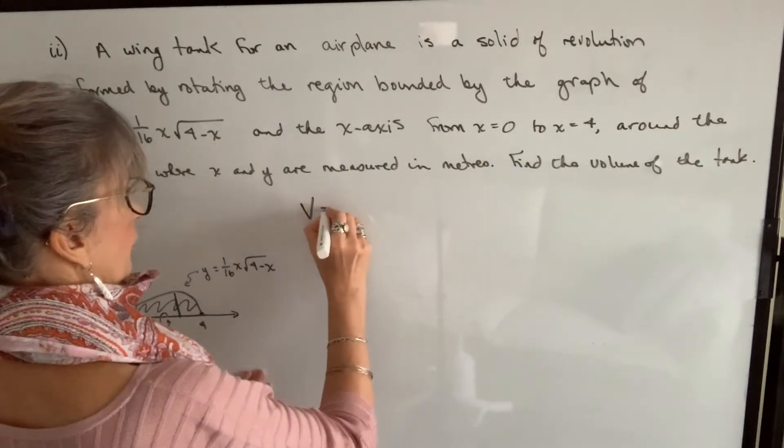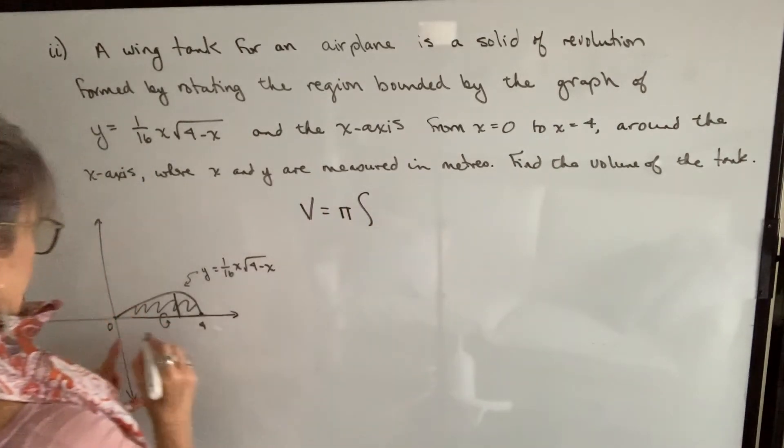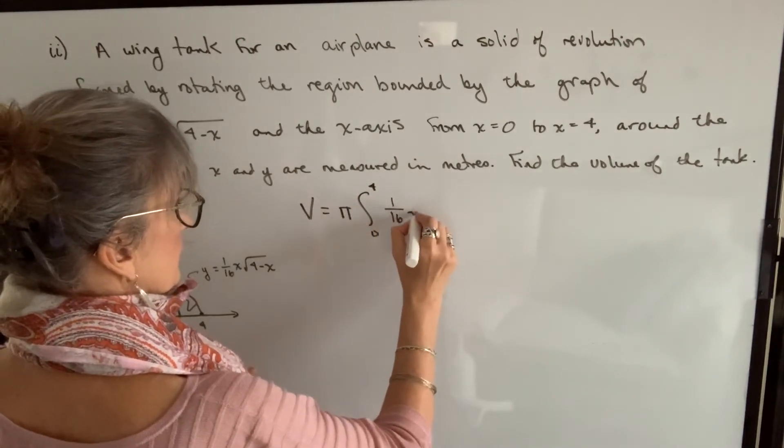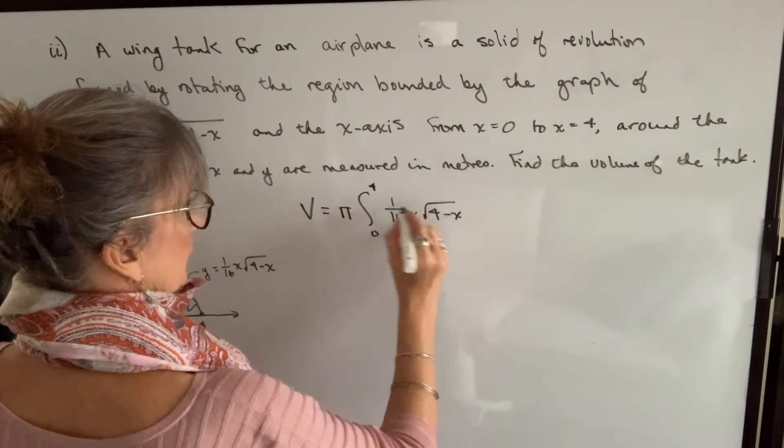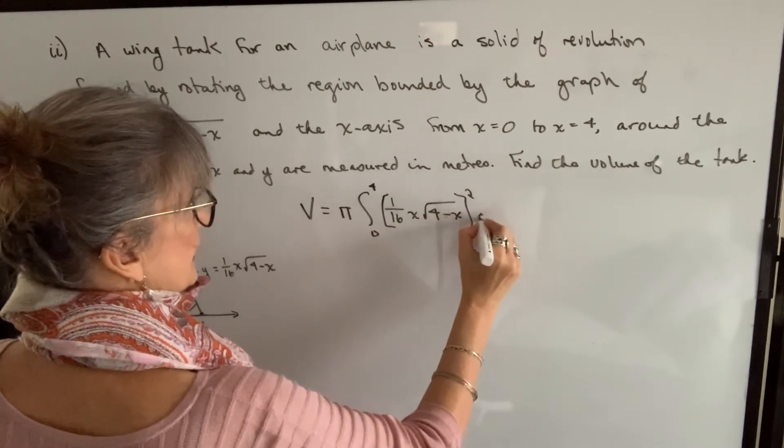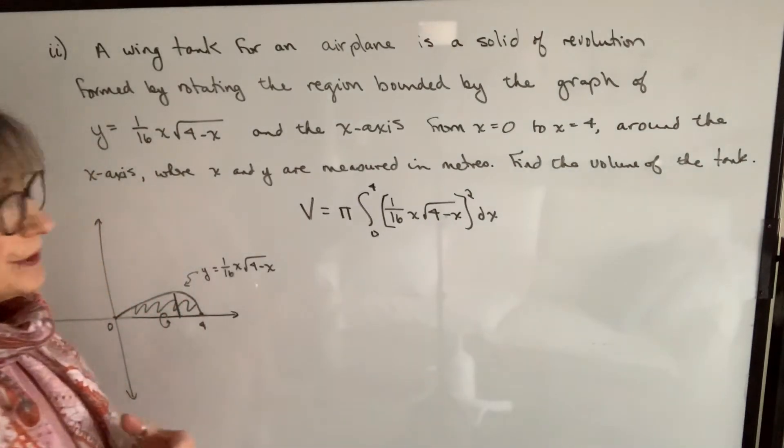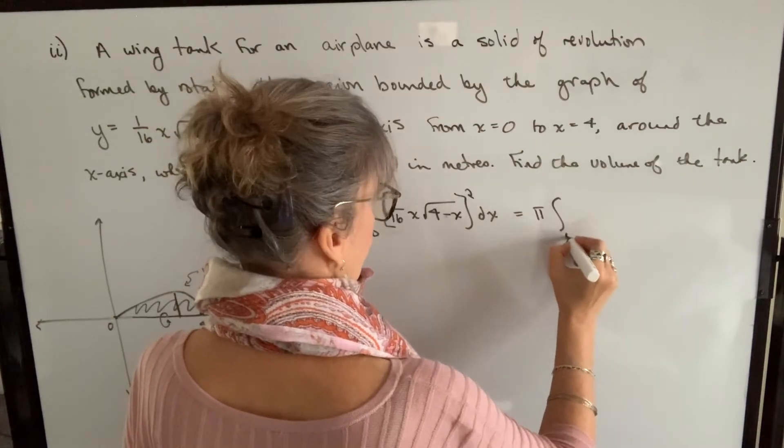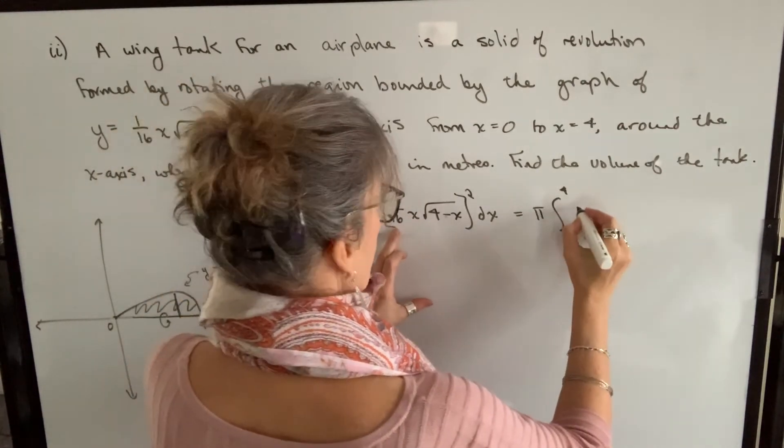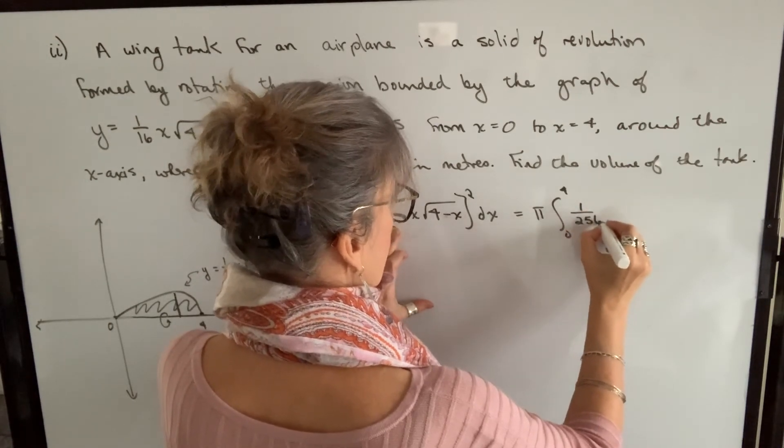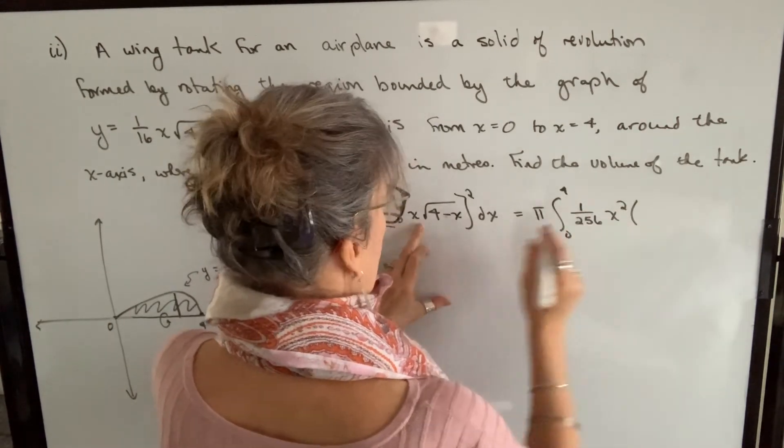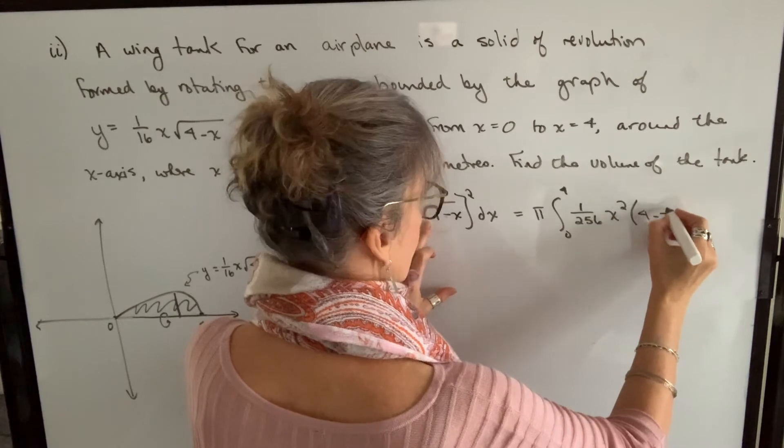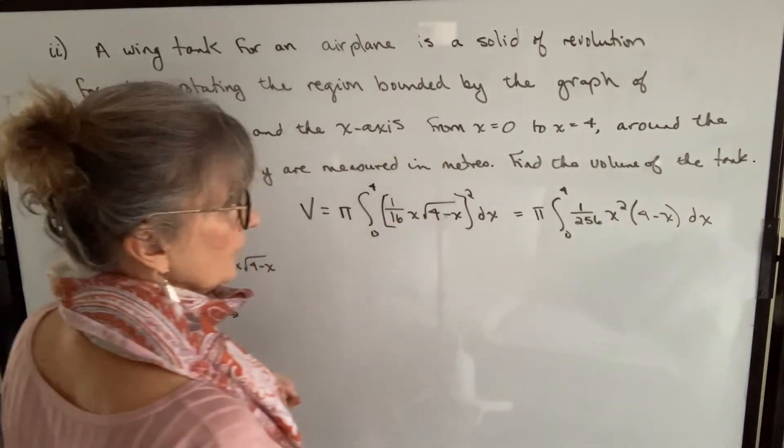So we set up our formula. Volume will equal, we can bring pi outside, and it's from 0 to 4 of this function squared dx. So you need to simplify that first before you integrate. 1/16th squared is 1 over 256. x squared. And then when I take a root and square it, it just cancels the root. So that will be 4 minus x dx.